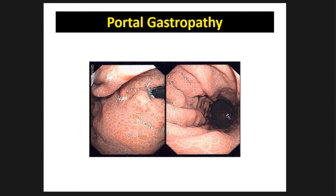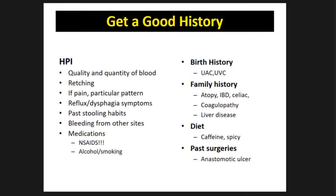When faced with a child with an upper GI bleed, it's important to get a thorough history. Always ask about the quality and quantity of blood and whether there was any retching.